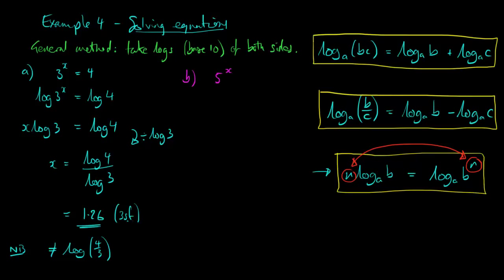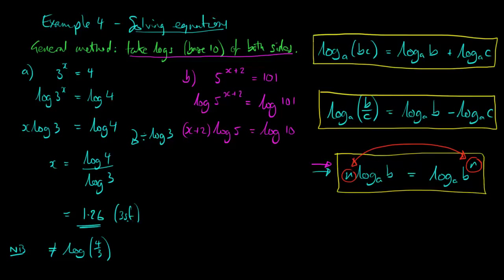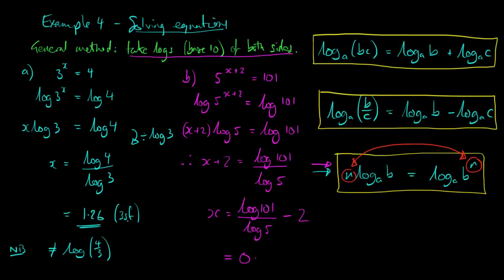Part b is slightly more complicated: 5 to the power x plus 2 equals 101. We start the same way — take logs of both sides. The log of 5 to the x plus 2 equals log of 101. Using the power rule, the entire power x plus 2 comes to the front, giving (x plus 2) times log 5 equals log of 101. Dividing by log 5 gives x plus 2 equals log 101 divided by log 5. Subtracting 2 gives x equals log 101 divided by log 5 minus 2, which is 0.868 to 3 significant figures.